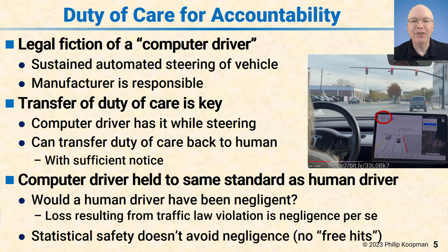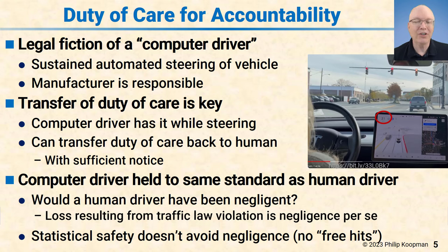Statistical safety does not avoid negligence — this is a really important point. If you say we have half as many crashes as a human driver, that's great, but it doesn't give you a free hit. Just as a human driver who drove a million miles crash-free and then runs a red light is still negligent, having a good statistical record doesn't excuse the behavior. It may affect the penalty, but negligence is negligence, and your historical record doesn't count. This is separate from being statistically safer than a human driver — it's on a case-by-case basis: did you behave in a non-negligent, reasonable driver way?